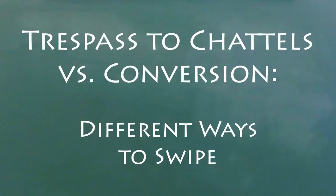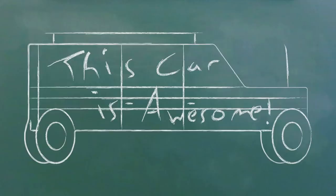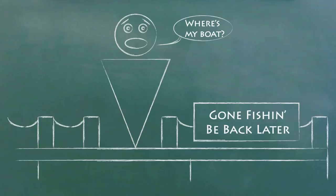Trespass to chattels is when you interfere with someone else's use of their personal property. It's not just stealing the thing because that's its own tort called conversion. For trespass to chattels, you have to show that there was some damage to the owner, either from their property losing value or from the owner being unable to use it for some significant period.